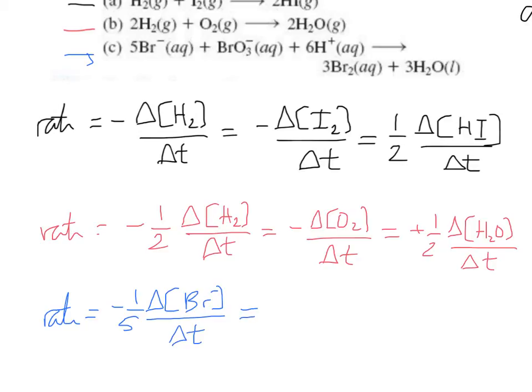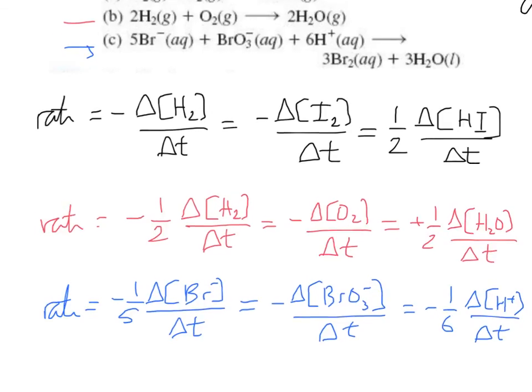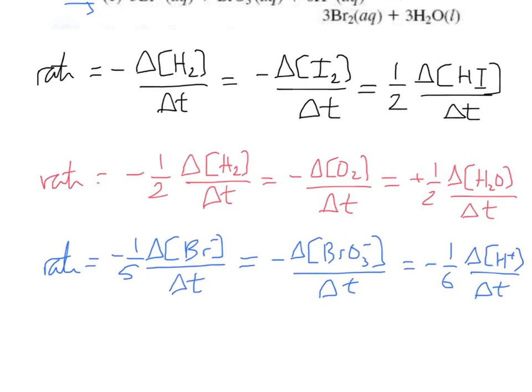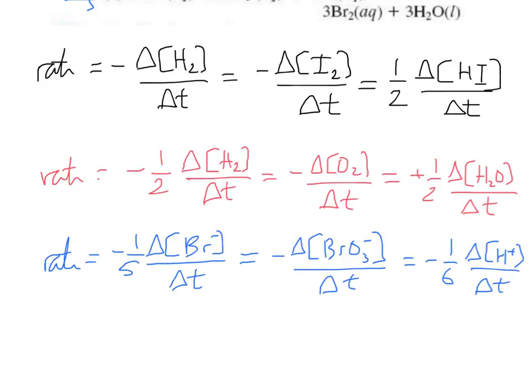And there's bromate, so that's minus change in concentration of bromate with time. And then there's one more reactant, that's the H-plus ion, so minus one-sixth, change in concentration of H-plus with time, which I suppose we could monitor that one maybe by measuring the pH.